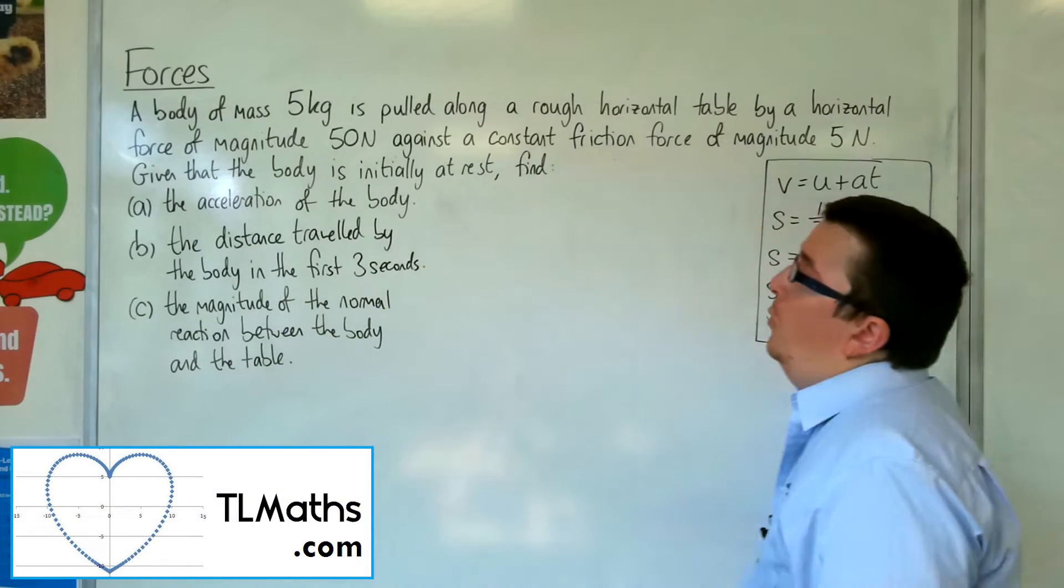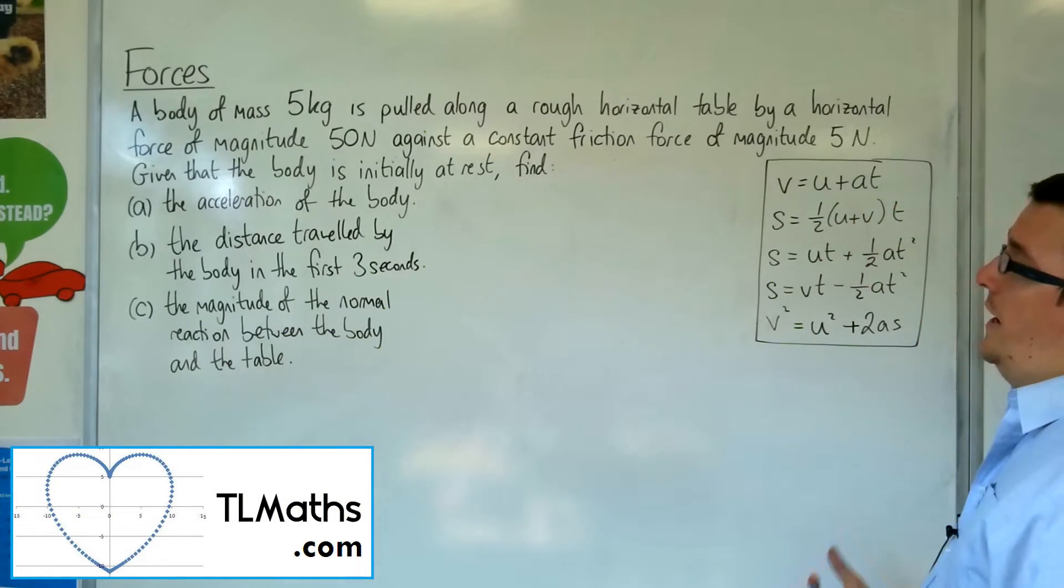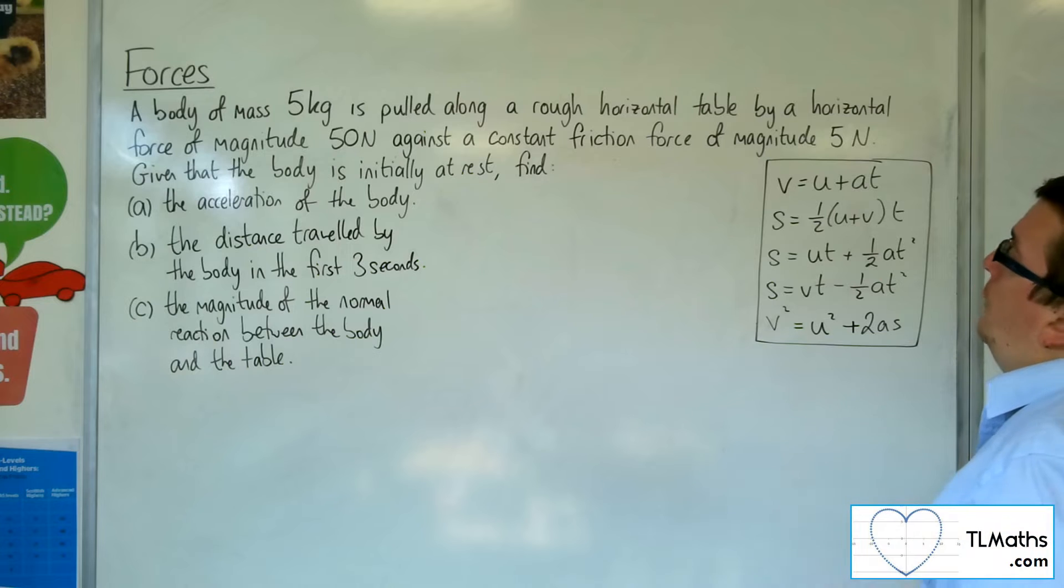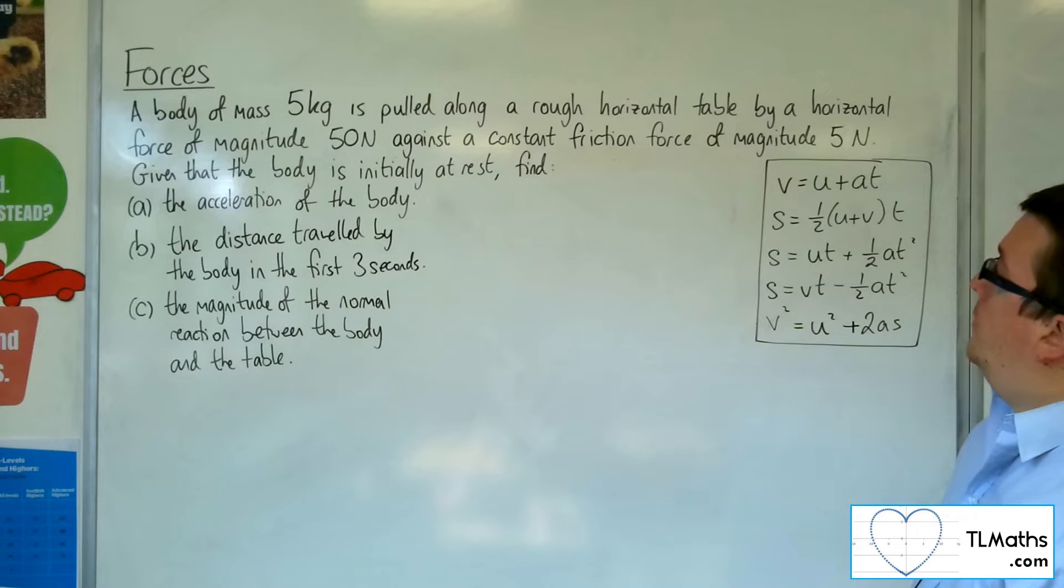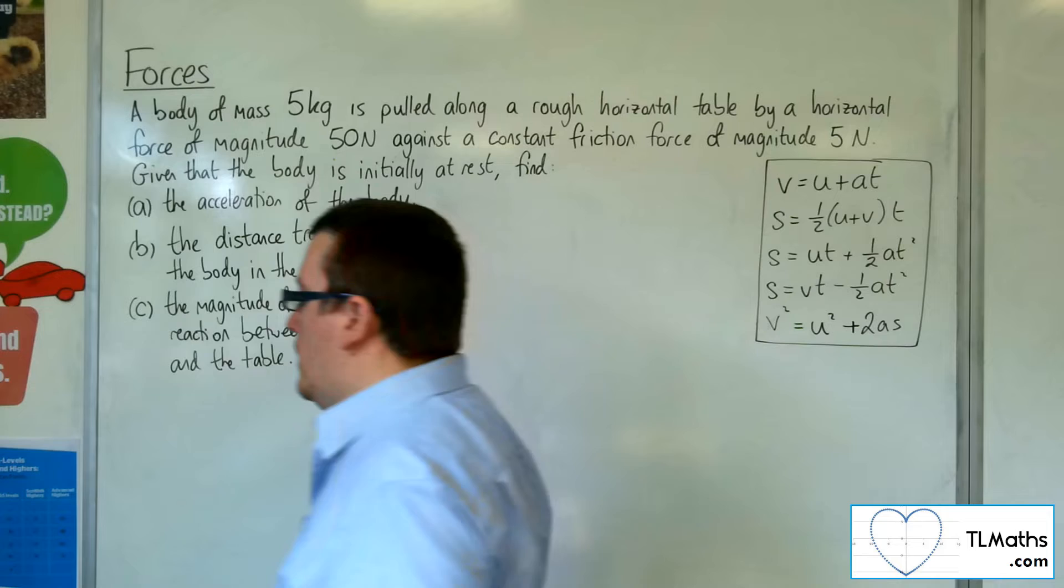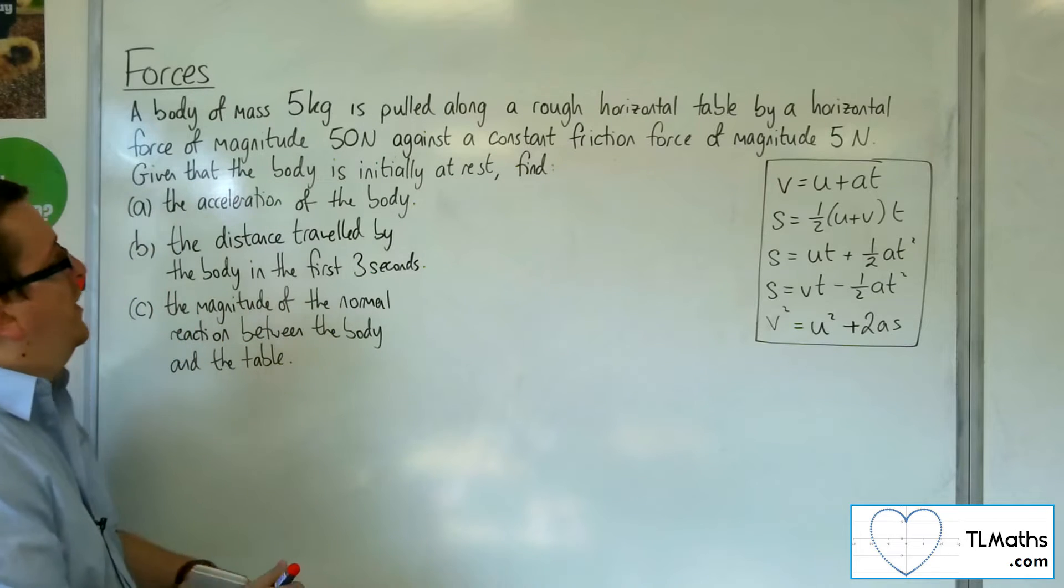So in this problem, we have a body of mass 5 kilos pulled along a rough horizontal table by a horizontal force of magnitude 50 newtons against a constant friction force of magnitude 5 newtons. Let's draw a diagram so we can visualize what's going on.